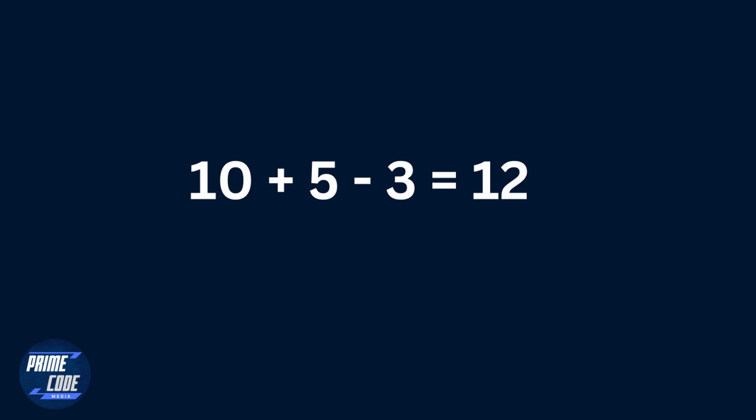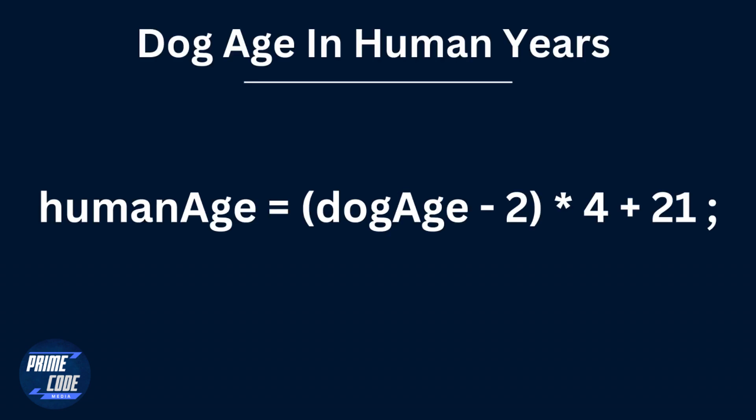And now it's time to use what we have learned so far to complete a challenge. In this challenge you are going to create a dog age in human years calculator using this formula. With this formula you are going to find out how old a dog would be if it was a human being. To complete this challenge, first create a prompt asking the user how old their dog is and then respond to them using an alert. So please pause this video and complete the challenge.